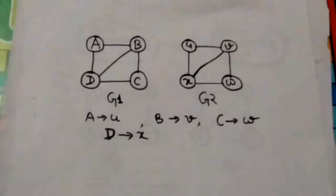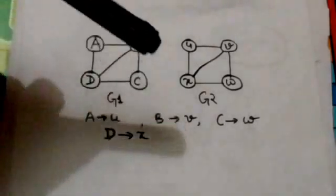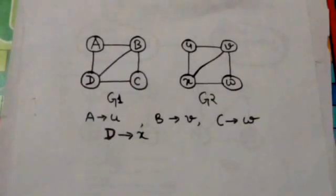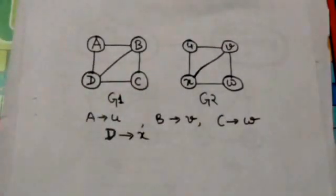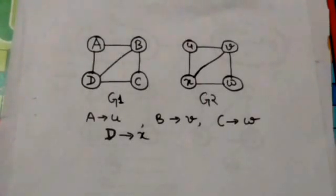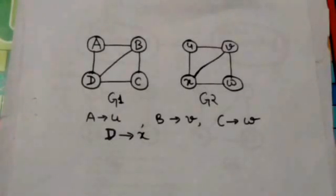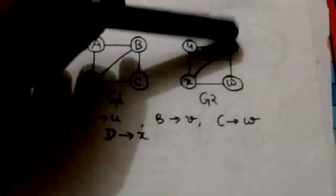There is an edge between vertices C and D in G1. In graph G2, there is an edge between the vertices corresponding to vertices C and D, that is between vertices V and X. There is an edge between the vertices B and D in G1. In graph G2, there is an edge between the vertices corresponding to vertices B and D, that is between vertices U and X.